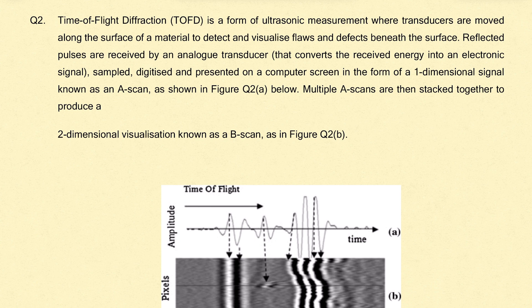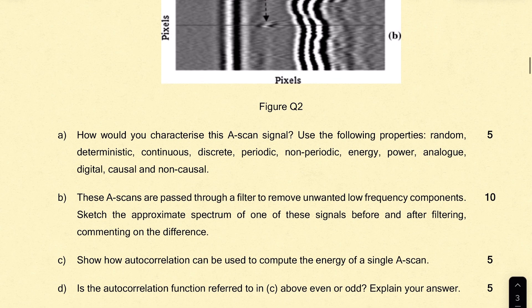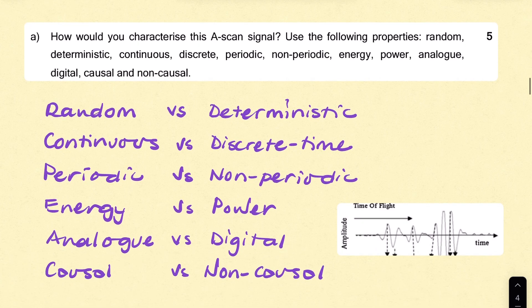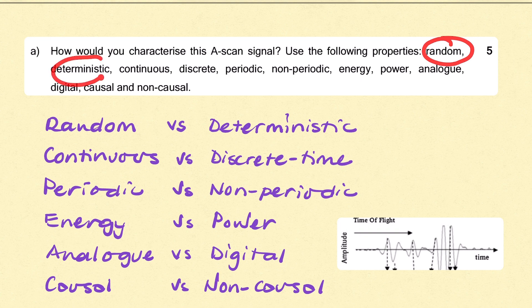In this question, we're given an example of a measurement device that takes analog signals and samples them, digitizes them, and presents them as images. The key word we should be looking for here is sampled and digitized. These signals are sampled and digitized because they're then presented on a screen. The question is asking us to characterize these signals using characteristics like is it random or deterministic, continuous or discrete in time, periodic or non-periodic.